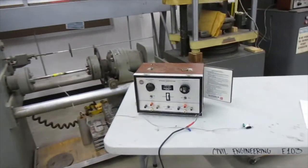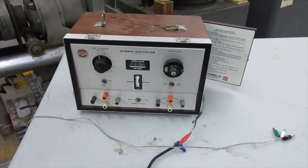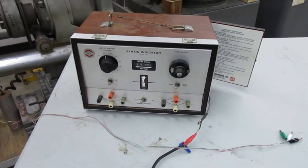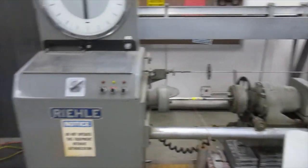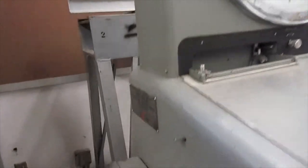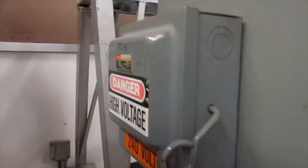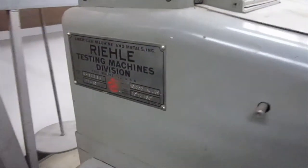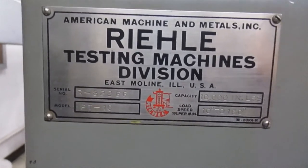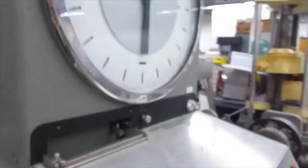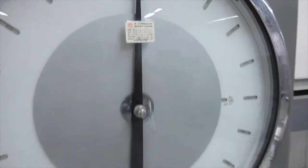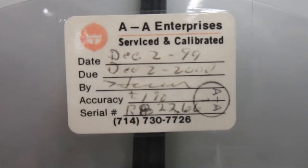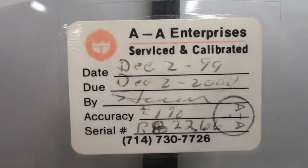The specimen is already on the machine, so I'm going to do a torsion test on this specimen. And here is the strain indicator box that we've been using for our previous activities. This is the on-off lever on the side. It's our Riel torsion testing machine. It looks like it was last calibrated in 1999, December 2nd. Maybe before some of you were born.